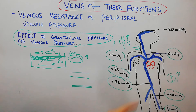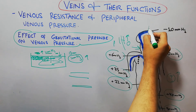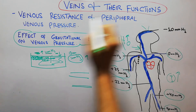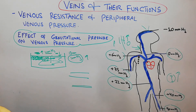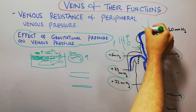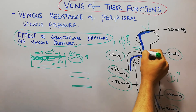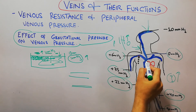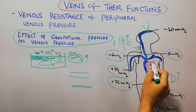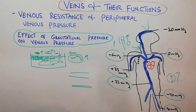The negative pressure in the skull is so significant that if the skull is opened during surgery, air can be sucked into the veins, enter the bloodstream, travel to the heart, cause embolism, and even death can occur.